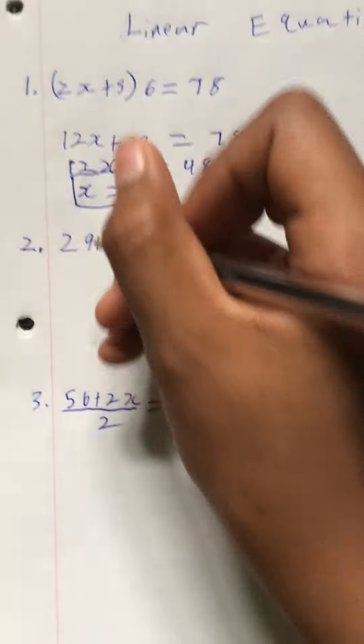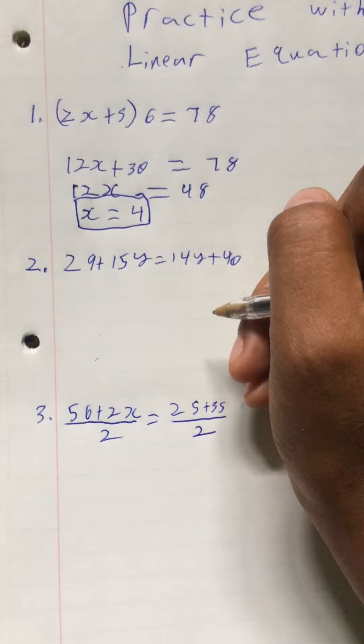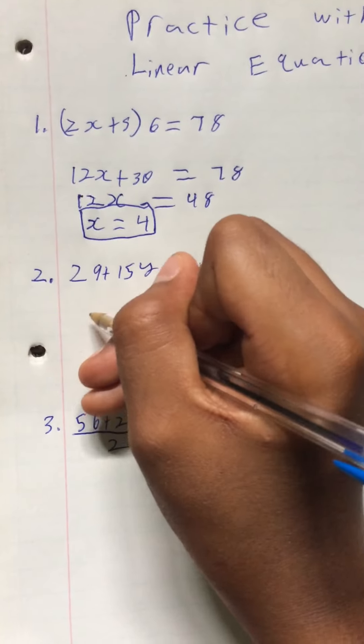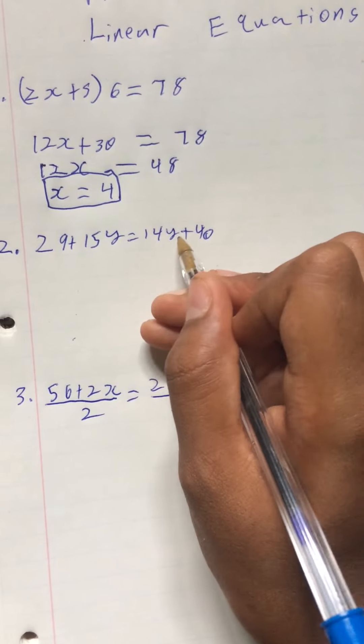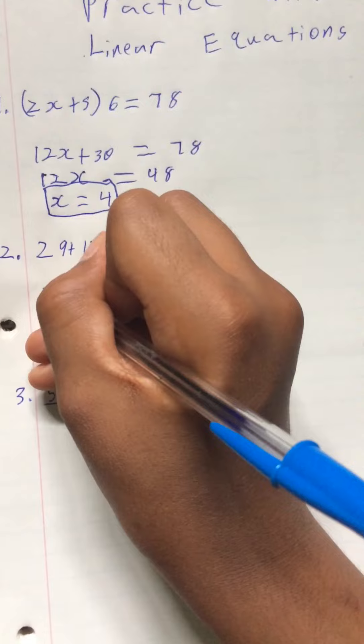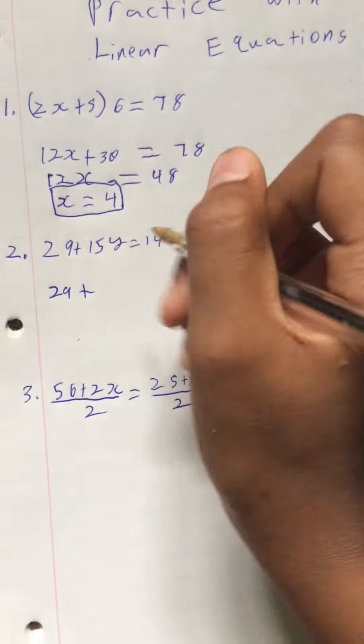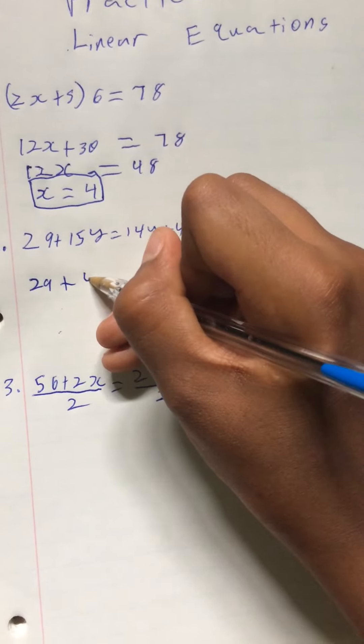Now for the second question. 29 plus 15y equals 14y plus 40. We can approach this problem a little differently. We can take out y on this side first. So 29 plus 15y minus 14y is just y.